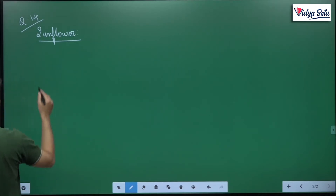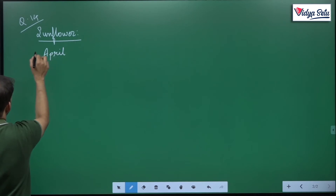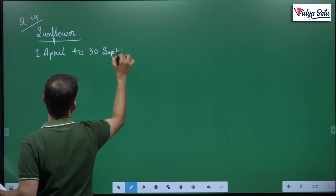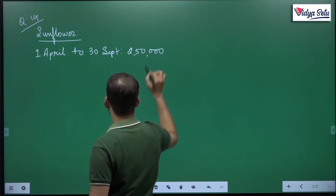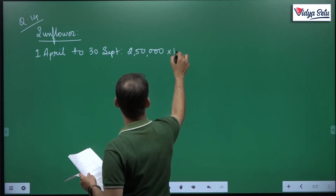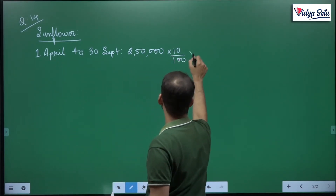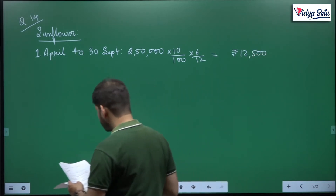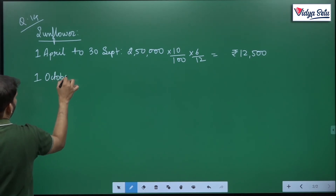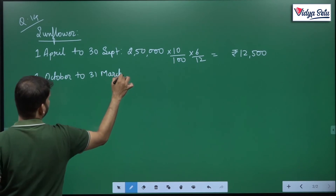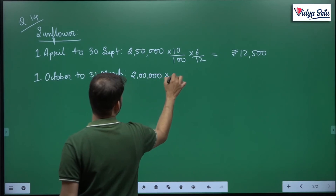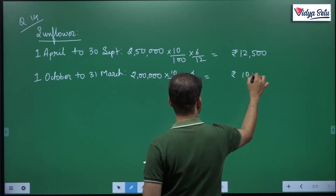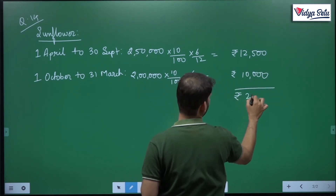Sunflower - from 1st April to 30th September, interest is calculated for only 6 months, that comes to rupees 12,500. Then from 1st October to 31st March on 2 lakh capital, 10 percent for the next 6 months gives us rupees 10,000. So the total interest on capital for the year becomes rupees 22,500.